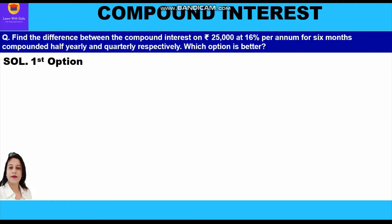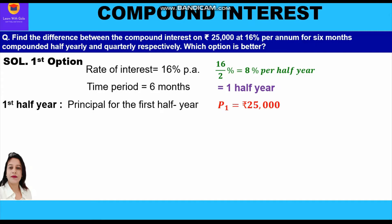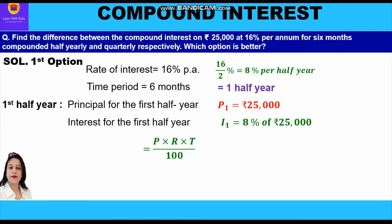First we will take up the first option where interest is compounded half yearly. Rate of interest is given as 16% per annum, so for half year it will be 16 divided by 2, that is 8% per half year. Time period is given 6 months, which means 1 half year. The principal for the first half year is Rs 25,000, and interest will be calculated at 8% on Rs 25,000.